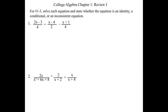When we have a fraction equation like this, the easiest method to solve is just to eliminate the fractions. We do that by multiplying everything by our common denominator. In this case, our denominators are 4 and 2, and our common denominator would be 4. So we're going to multiply everything by 4.